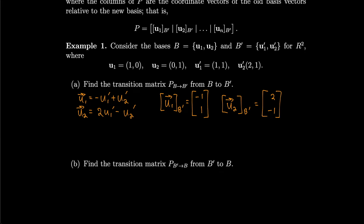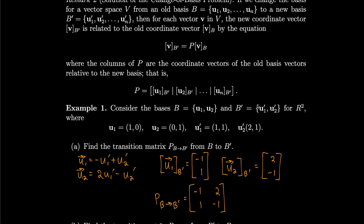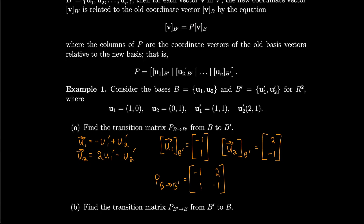Now that we have U1 and U2 rewritten in terms of U1 prime and U2 prime, we can write U1 in terms of the new basis B prime as the coordinate vector minus 1, 1 — taking minus 1 for U1 prime and 1 for U2 prime as the coefficients. Similarly, U2 expressed in terms of B prime gives coordinate vector 2, minus 1. Therefore, the transition matrix P from B to B prime is the matrix with column vectors minus 1, 1 and 2, minus 1.